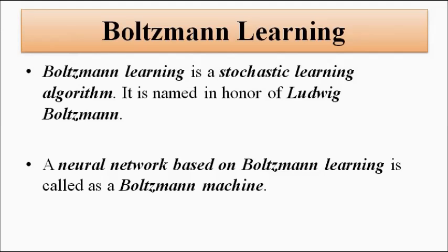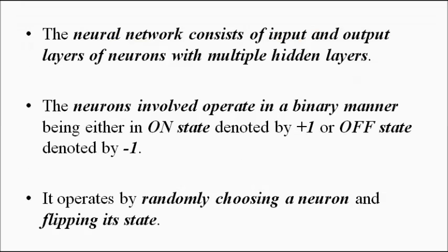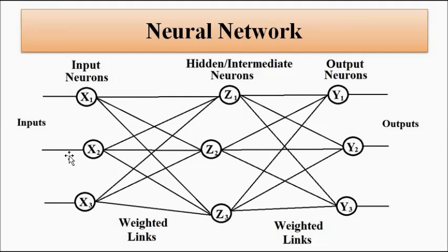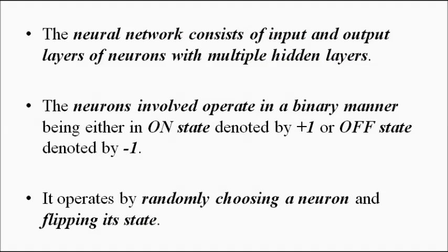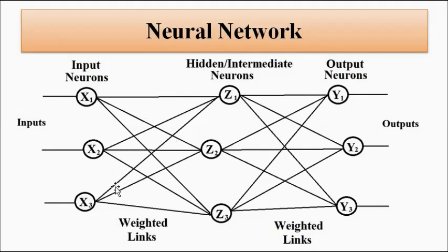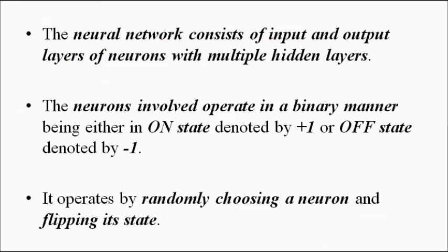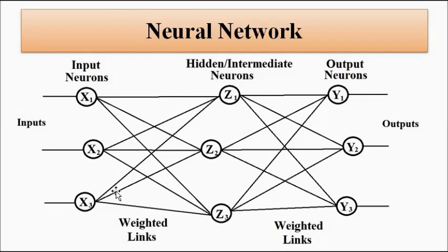The neural network based on Boltzmann learning is called a Boltzmann machine. It consists of an input layer of neurons, an output layer providing the final output, and can have multiple hidden or intermediate layers of neurons. An interesting feature is that all neurons in a Boltzmann machine can have two possible states: an on state denoted by +1 and an off state denoted by -1.